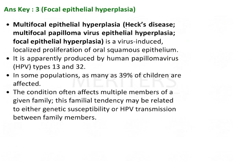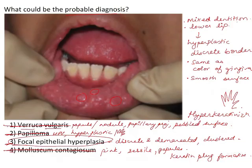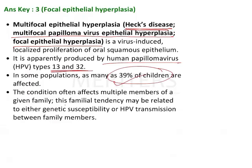Multifocal epithelial hyperplasia, also known as Heck's disease or multifocal papillomavirus epithelial hyperplasia, is caused by human papilloma virus types 13 and 32. Usually children are affected, as shown in the image. The condition often affects multiple members of a given family due to familial tendency and susceptibility to transmission — people staying together can cross-contaminate, so there is HPV transmission between family members.